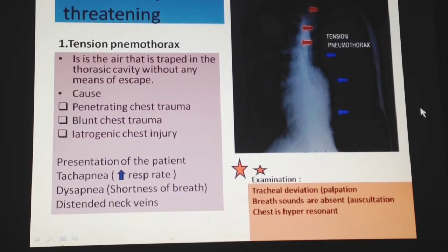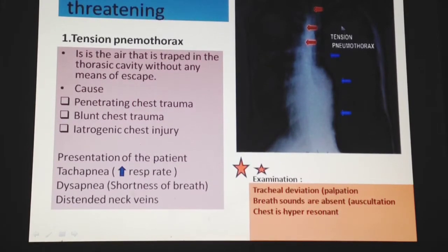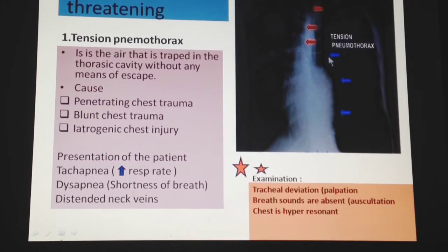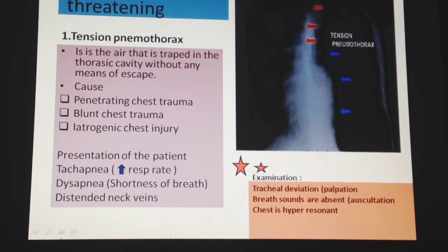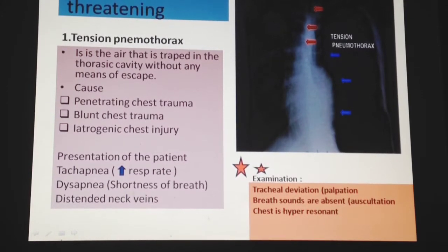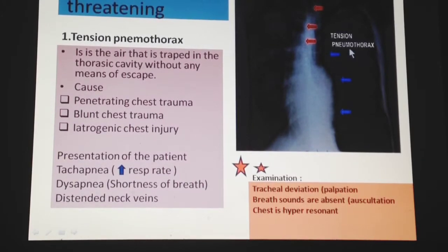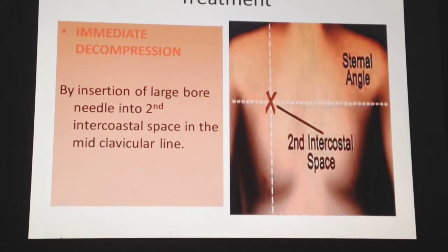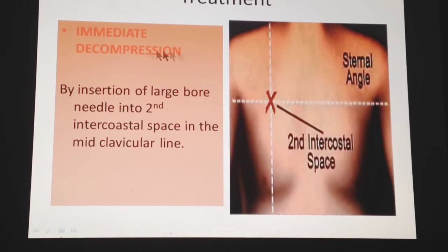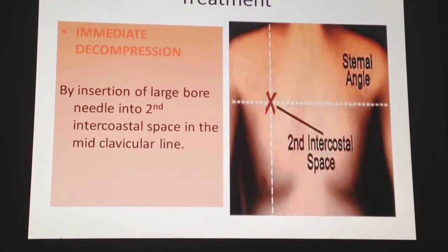The patient presents with cyanosis, dyspnea, and distension of neck veins. On examination, the entrapped air pushes on the lung causing collapse, and also pushes the mediastinum and trachea toward the opposite side, resulting in tracheal deviation on palpation. Breath sounds are absent on the affected side and there is hyper-resonance on percussion, indicating a large amount of air. Treatment is immediate decompression by insertion of a large-bore needle in the second intercostal space at the mid-clavicular line.